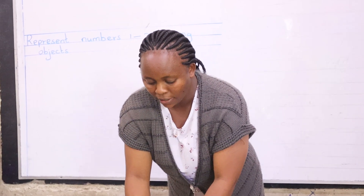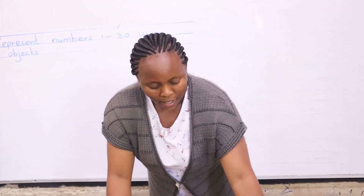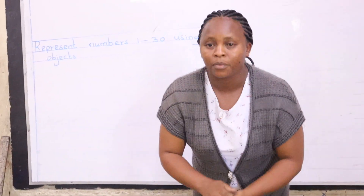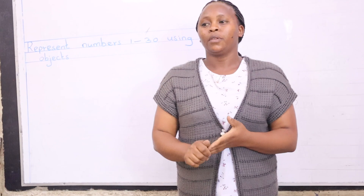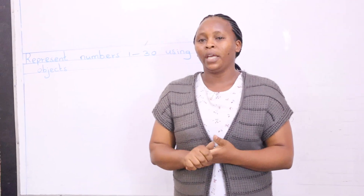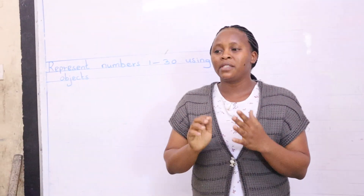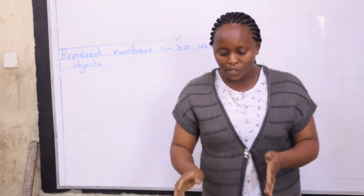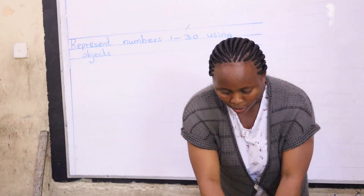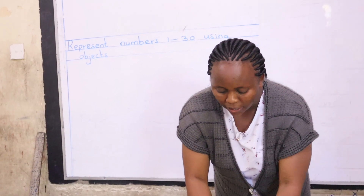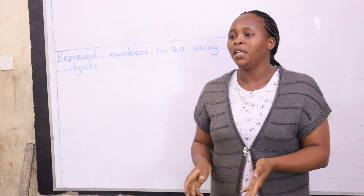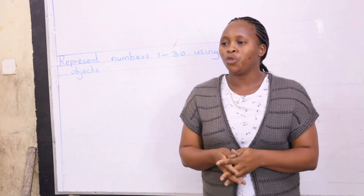Can you do that for Jason? Okay. I'm saying that if I give you an exercise to do of counting and presenting numbers one to thirty, we'll be able to do it. Okay?